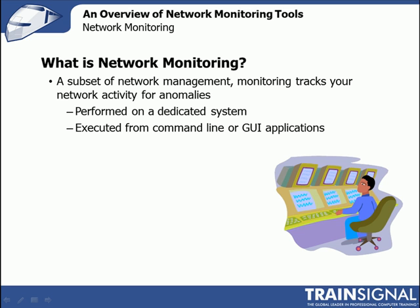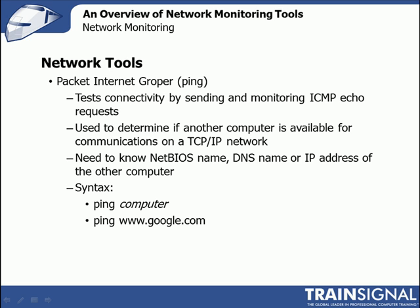Now we'll dive into examples of the most commonly used network monitoring tools. Packet Internet Groper, or PING for short, is probably the most recognized network troubleshooting tool, though probably not by its longer name. When you have a problem with network connectivity, PING is usually the first tool pulled out of the arsenal. It tests connectivity by sending and monitoring ICMP echo requests used to determine if another computer is available for communications on a TCP/IP network.